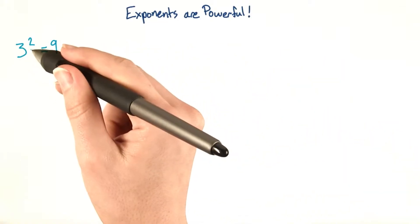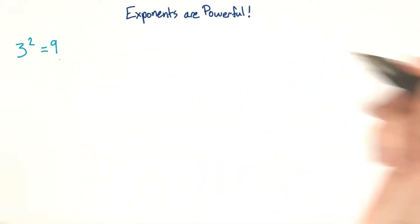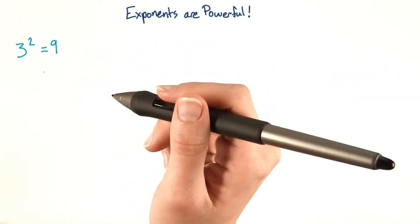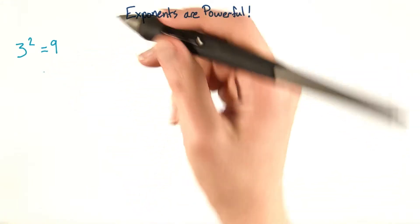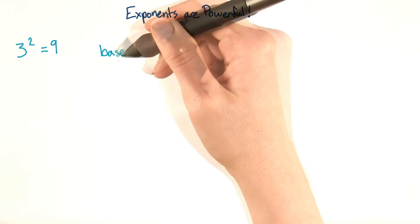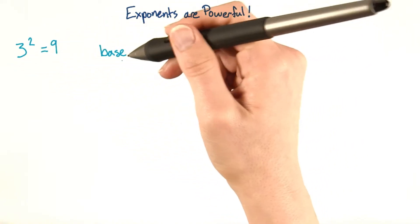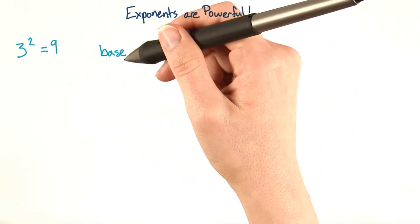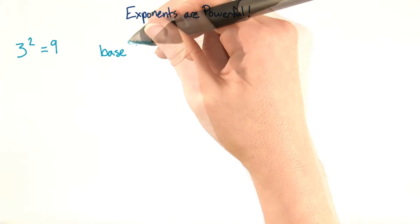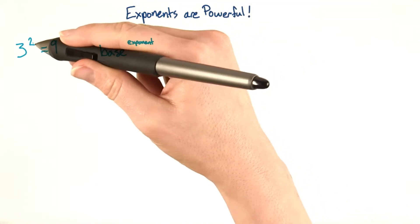How is it that 3 squared equals 9? Exponents are just a different way to express multiplication. With exponents, we start with a base. In this case, our base is 3. And then we raise the base to the power of the exponent. In this case, 2 is the exponent.